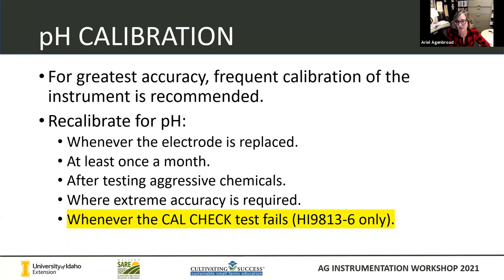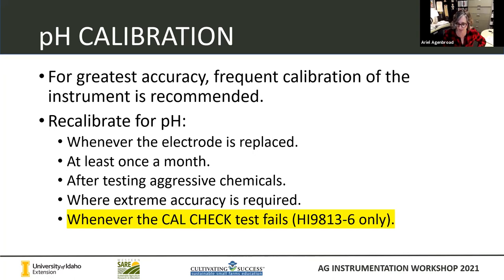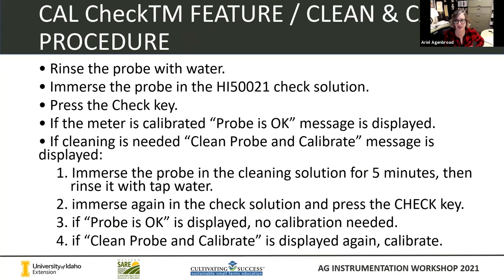We do need to calibrate these instruments for greatest accuracy. You're going to want to calibrate anytime you replace an electrode, maybe once a month if you get it out and use it frequently, if you've been testing any aggressive chemicals, or if you really want to be as accurate as possible. What we have in this model is a calibration check feature, which is really neat, so you may only need to calibrate after you've tried the cal check and it fails.